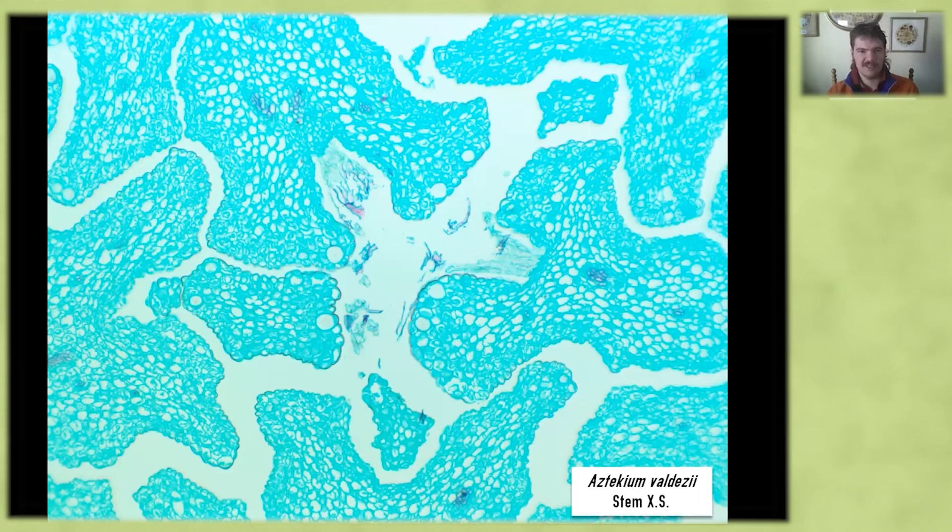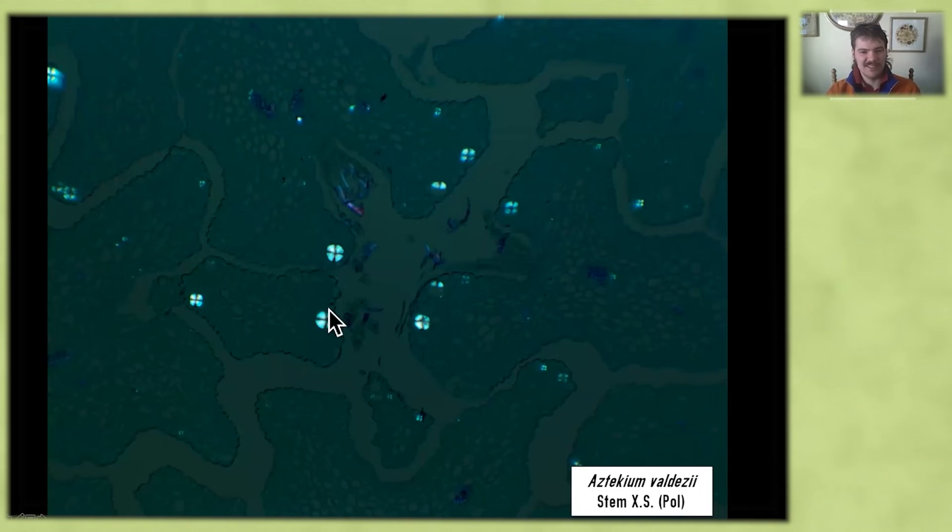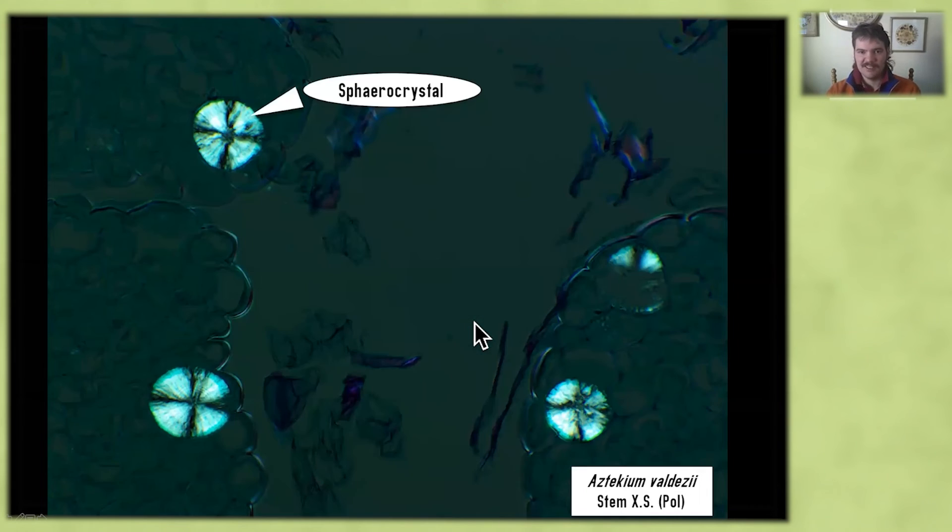But one unusual thing that we can notice are these strange circular cells. They almost look like bubbles or maybe there was a problem during sectioning that caused these to tear out. So whenever something looks kind of strange in a cactus anatomical section, we always hit it with polarized light. And when we do, we can see that Maltese cross interference pattern, which means we're looking at crystals. And because they're not spiky balls, we can't call them druses, we've got to call them something else. So these are spherocrystals. And interestingly, I did a little bit of research, we don't know what these are made of. We know that the druses are calcium oxalate, but we don't actually know the compound that these crystals are made of.